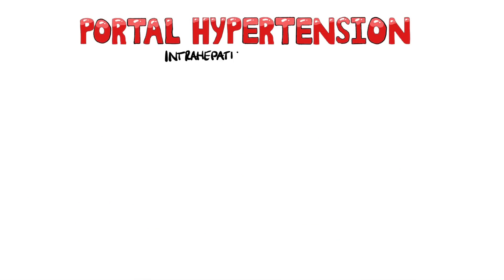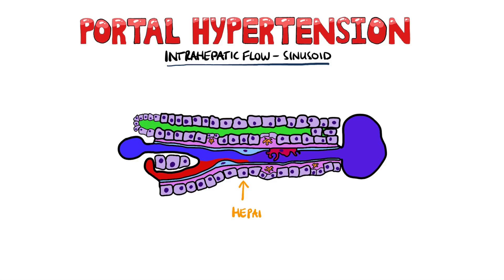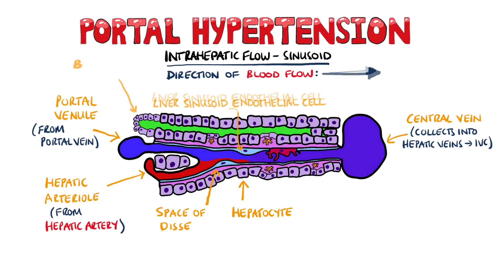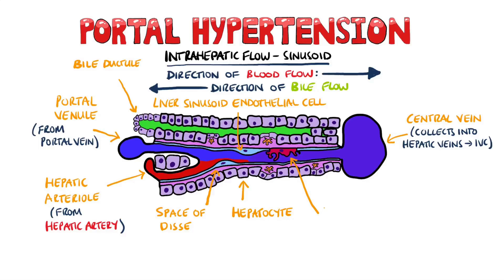Inside the liver, you have structures known as sinusoids, which are specialised capillaries within the liver. The hepatocytes of the liver are separated from these sinusoids by a space known as the space of Disse. Venous blood from the portal system mixes with arterial blood from the hepatic artery in the sinusoid and then flows through into a central vein. These central veins collect together in the hepatic veins, which take blood into the inferior vena cava. You can also see a bile ductule, which collects bile produced by the hepatocytes and takes it down towards the gallbladder.